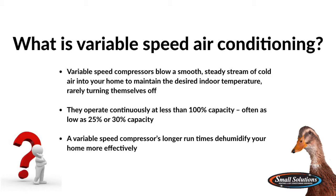A variable speed compressor works differently. In order to maintain a comfortable indoor temperature, it actually operates continuously, but not at 100% capacity. It's often operating as low as 25% or 30% capacity. As a result, these types of air conditioning systems run for much longer cycles than a single stage unit, but they're not operating at full capacity.